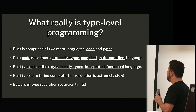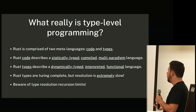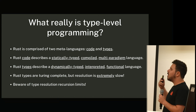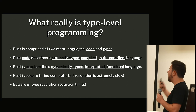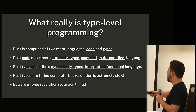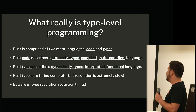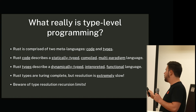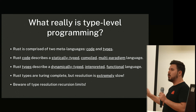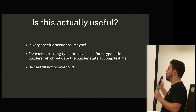So what really is type-level programming? I would say — this is my personal opinion — Rust is comprised of two meta-languages: your code and your types. Rust code describes a statically typed, compiled, multi-paradigm language we all love. However, Rust types describe their own language too — a language that is dynamically typed, interpreted, and functional. Your interpreter is the compiler. So Rust types, in this case, are Turing complete. The compiler resolving your types describes a Turing complete language, but the resolution of those types is extremely slow, and there are type resolution recursion limits. It'll only evaluate types for so long before it decides something's probably gone wrong and gives up. Because it's Turing complete, you can actually cause infinite loops in your types, and the compiler doesn't want to just hang forever.